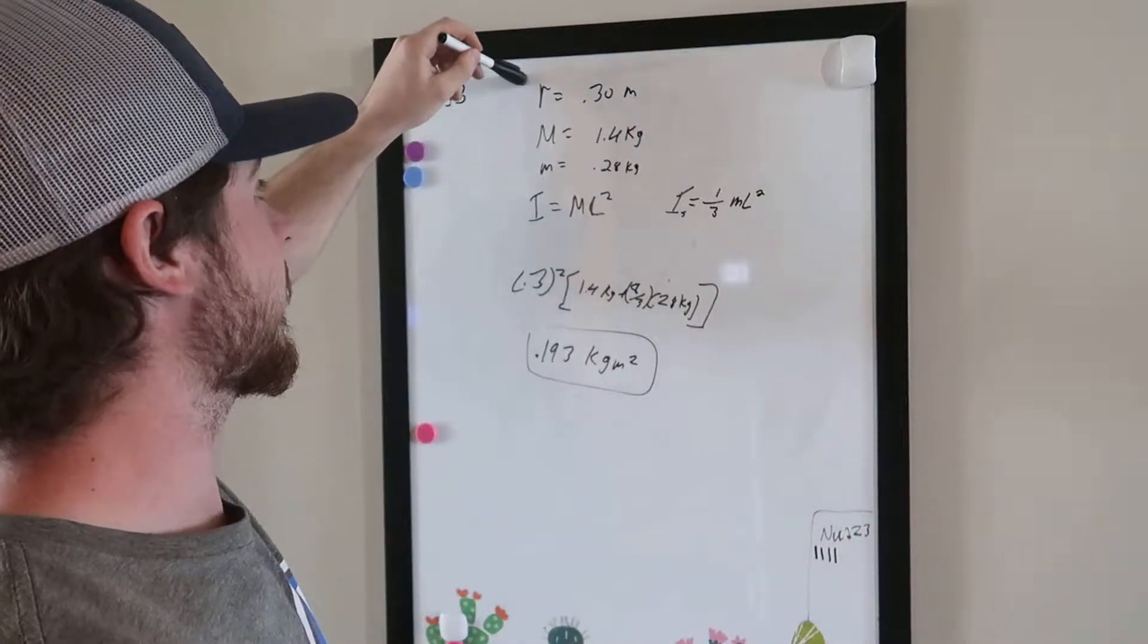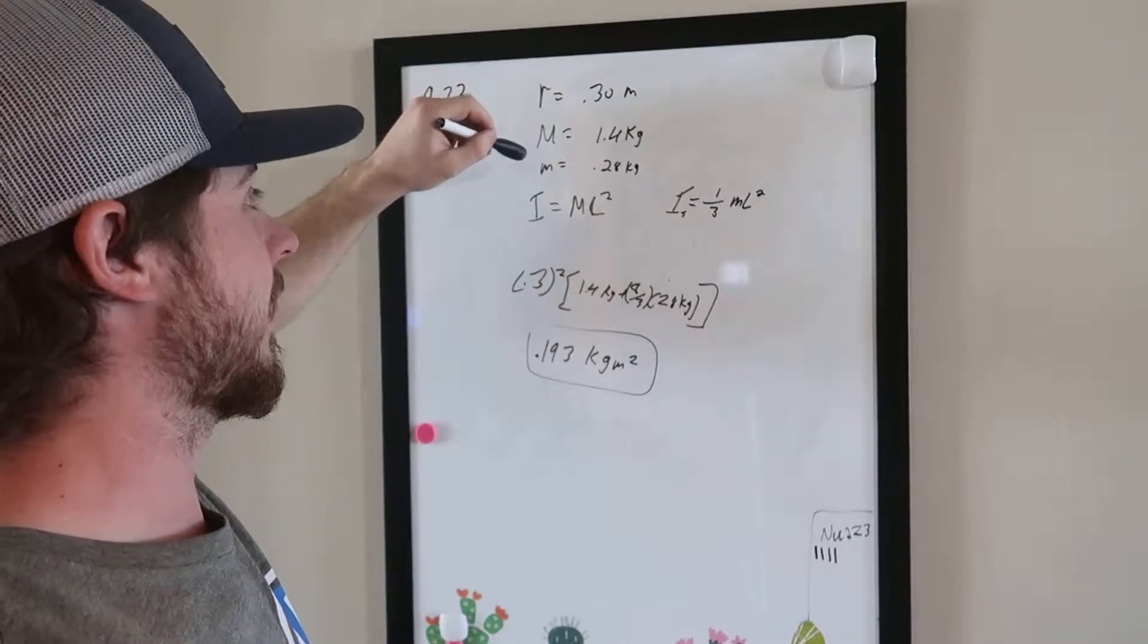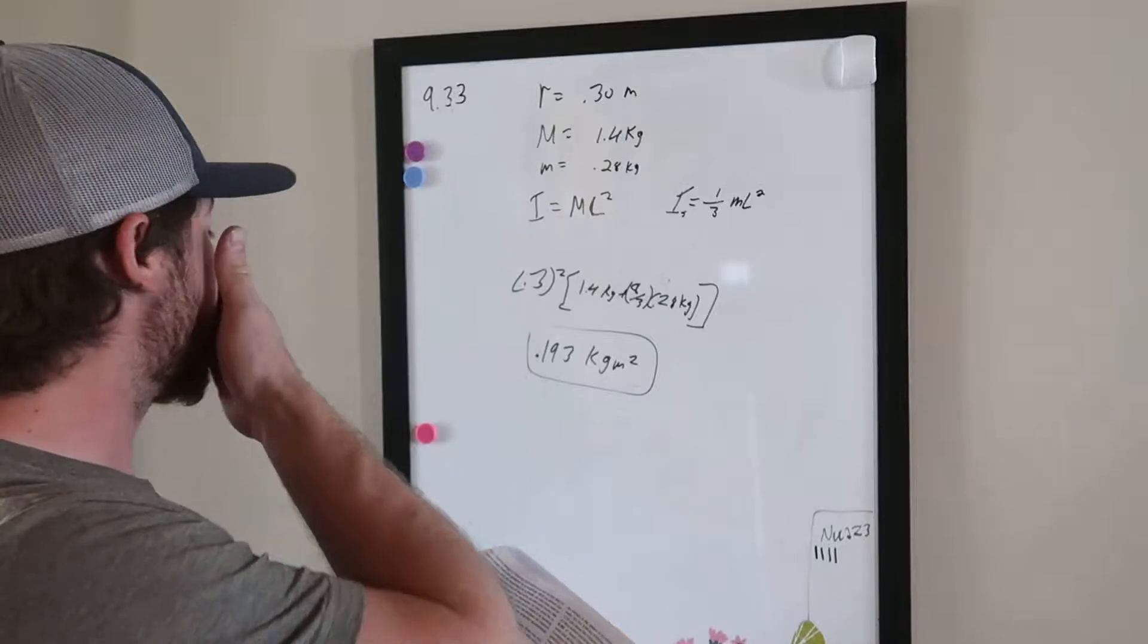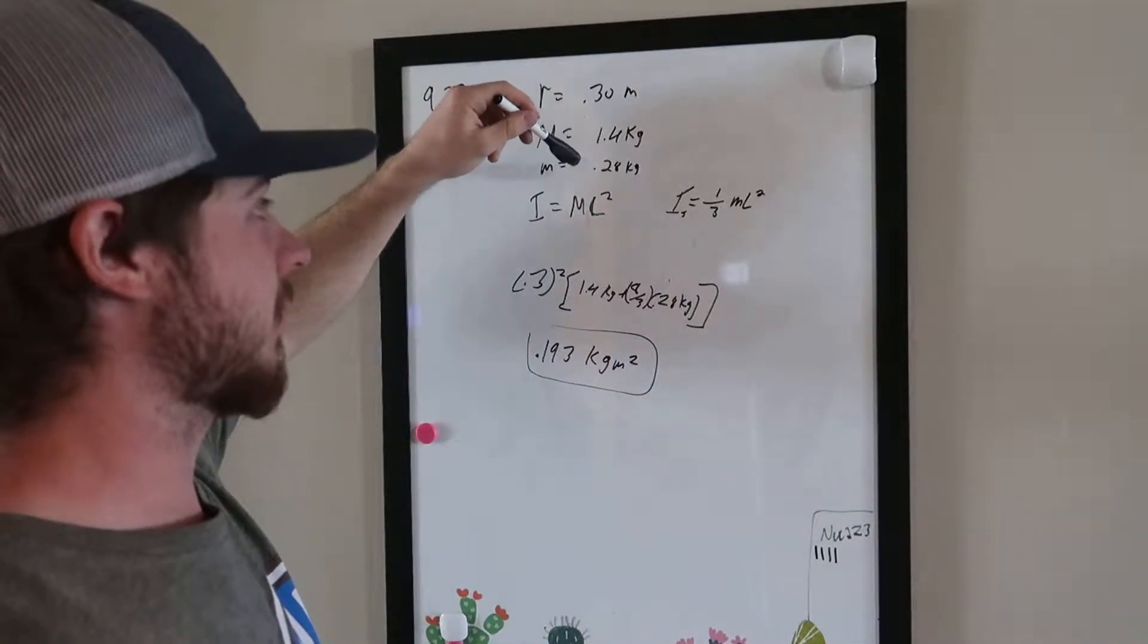So the radius is 0.3 meters, the mass of the wheel M is 1.4 kilograms, and the little m is the mass of the spokes, 0.28 kilograms.